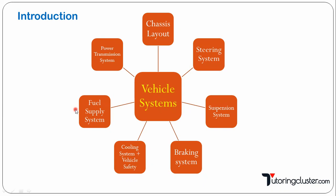Then of course there is the fuel supply system. So these are the various systems basically present in a vehicle and that is what unit number four is all about. We are going to learn various systems — for example, if we take the braking system, we will learn why the braking system is needed, what are the types of brakes available, how they look, their construction and working. We will learn each system one by one.